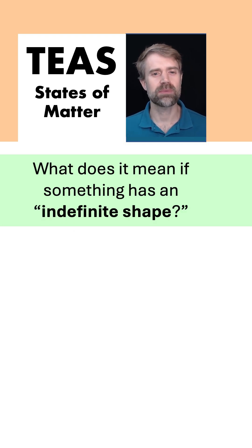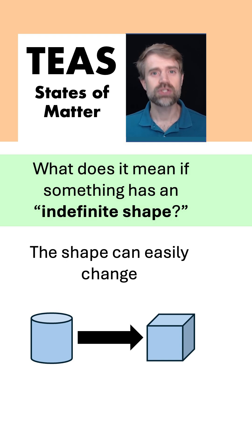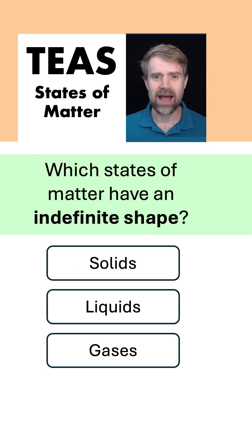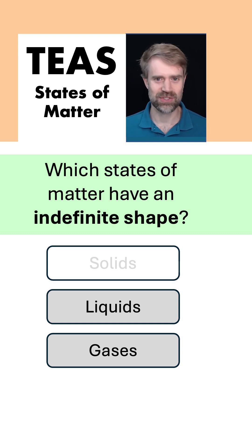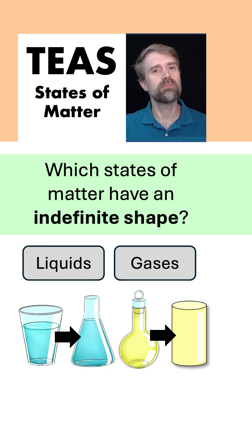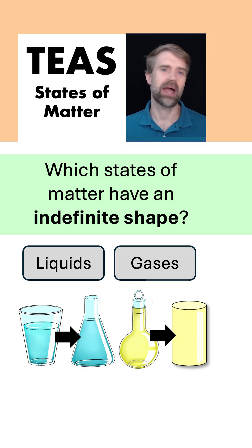What does it mean if something has an indefinite shape? It means the shape can easily change. So which states of matter have an indefinite shape? Liquids and gases. When you put liquids or gases into a new container, their shape changes to match the new container. Indefinite shape.